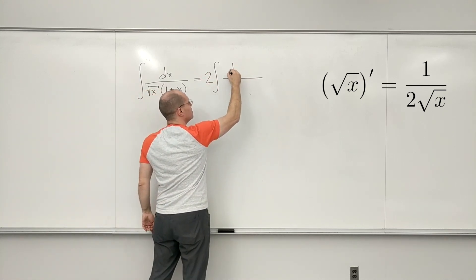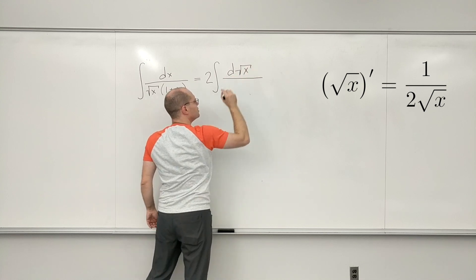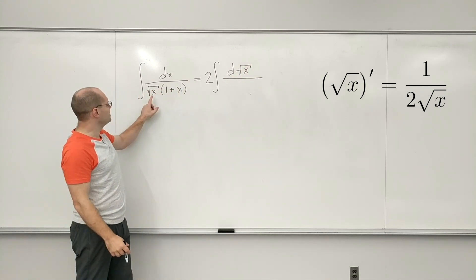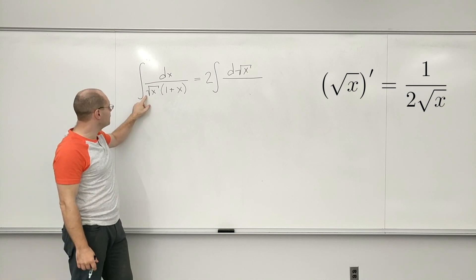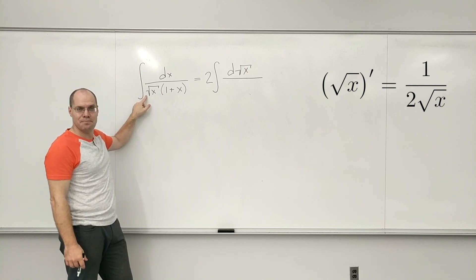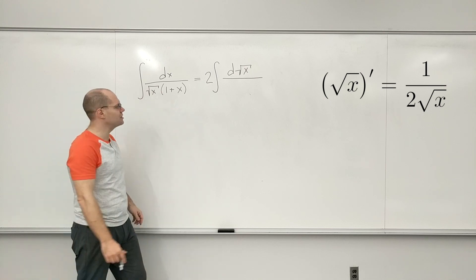So this is both a recognition that this is basically the derivative of square root of x, but also the fact that it's missing a factor of 2 on the bottom. So I did those two things at once.